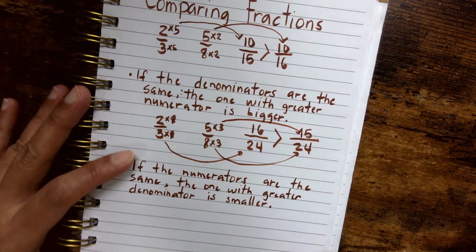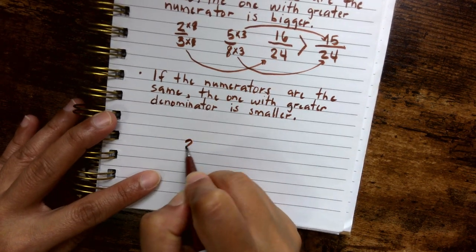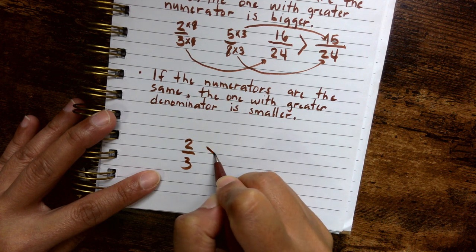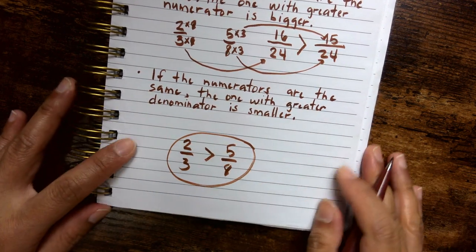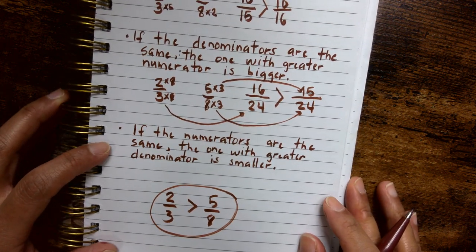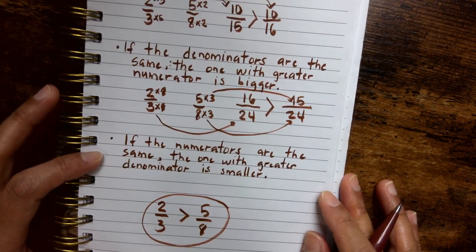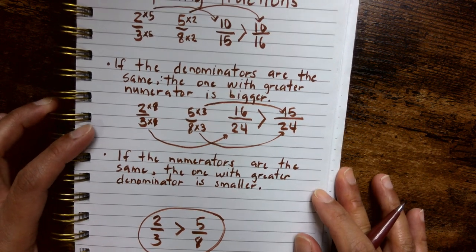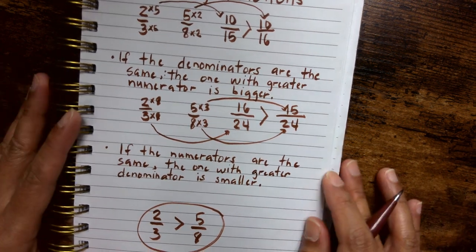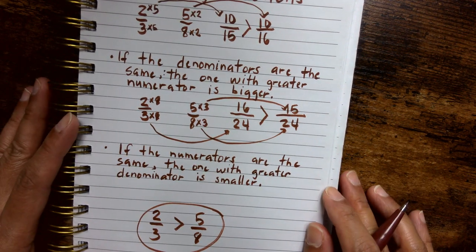One thing is very obvious: two thirds is greater than five eighths. I hope this video helped you. And just letting you know that there is more than one way, more than just these two ways to look at fractions in order to compare them. But I think this is a good starting point. Thank you very much, everyone, for watching.